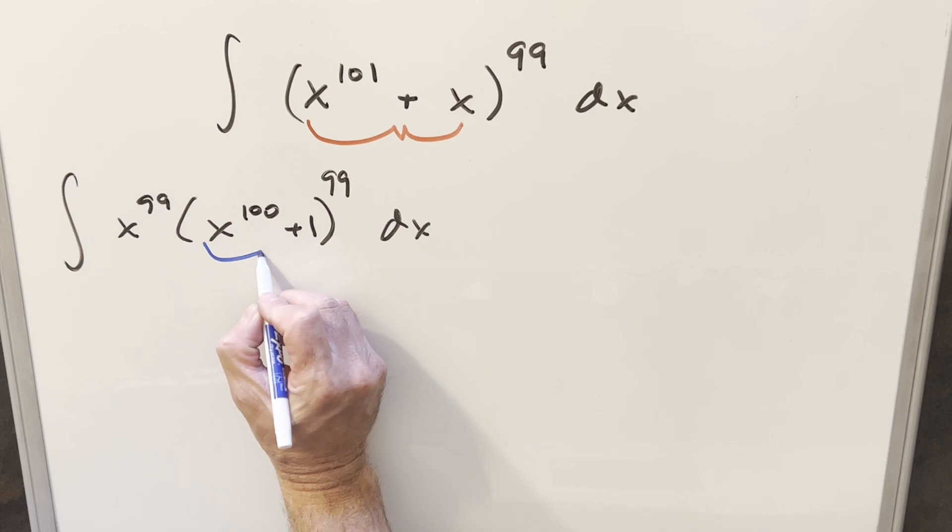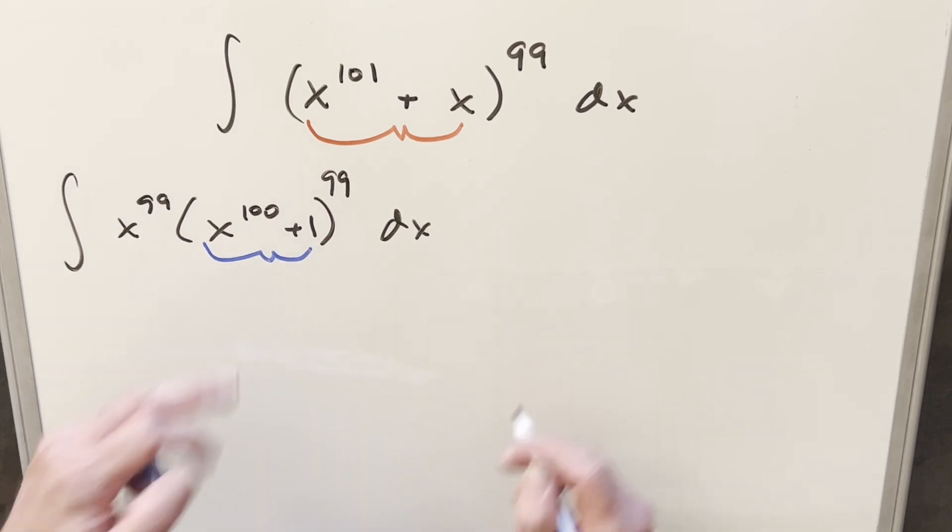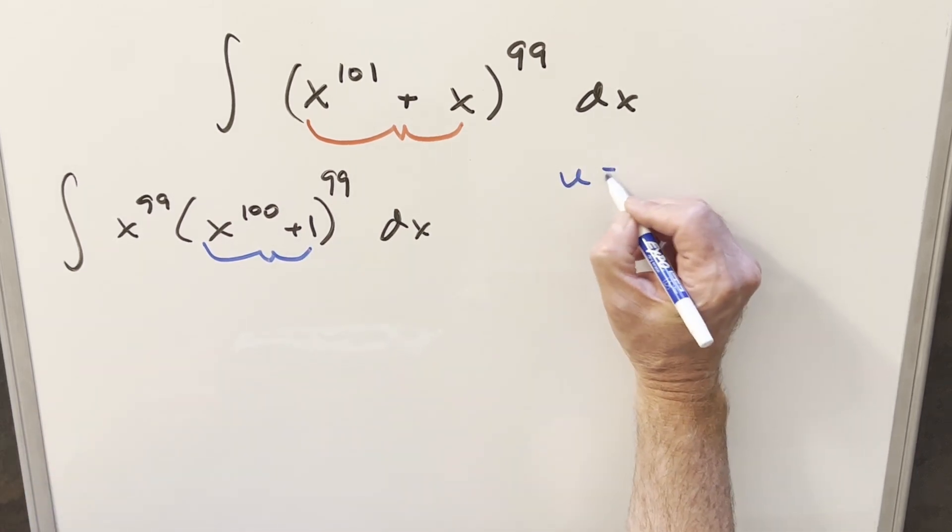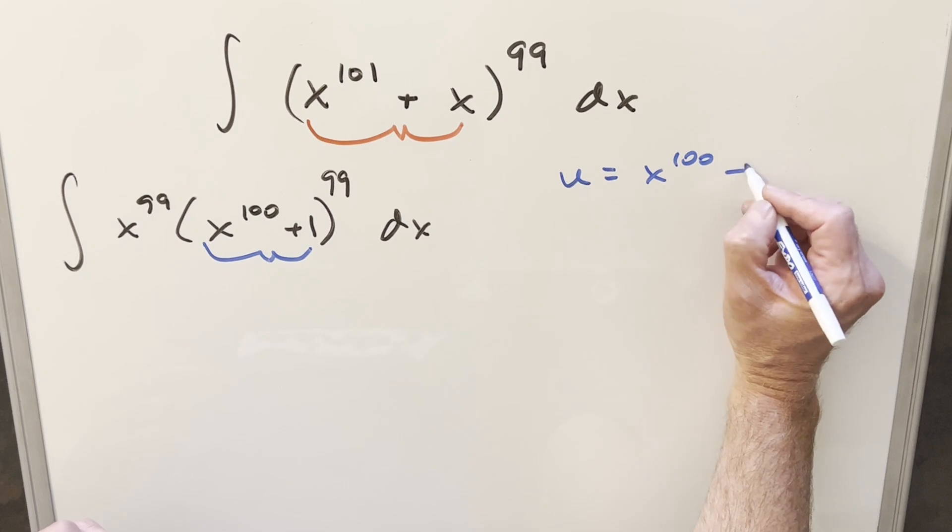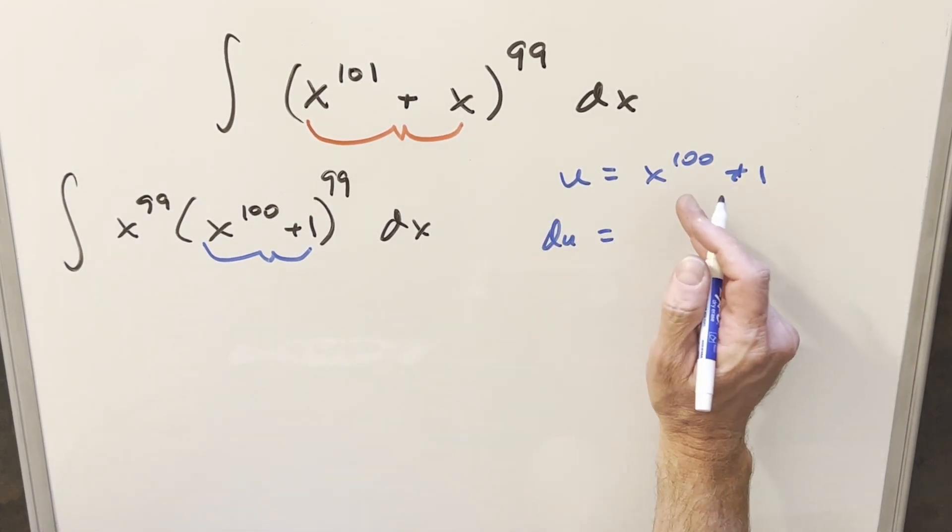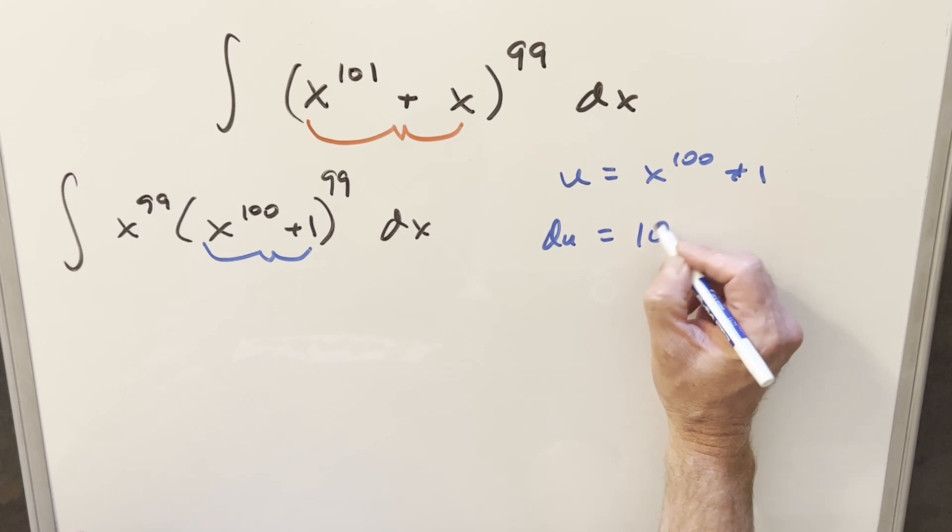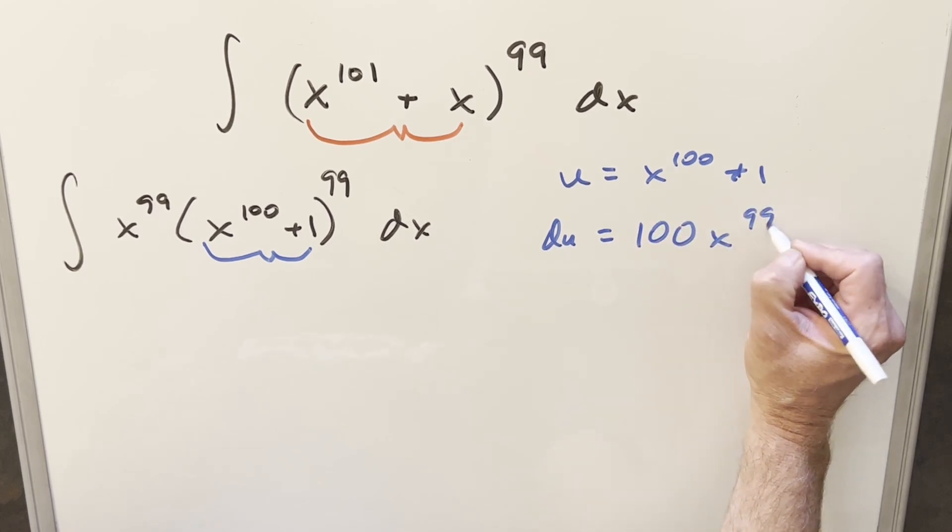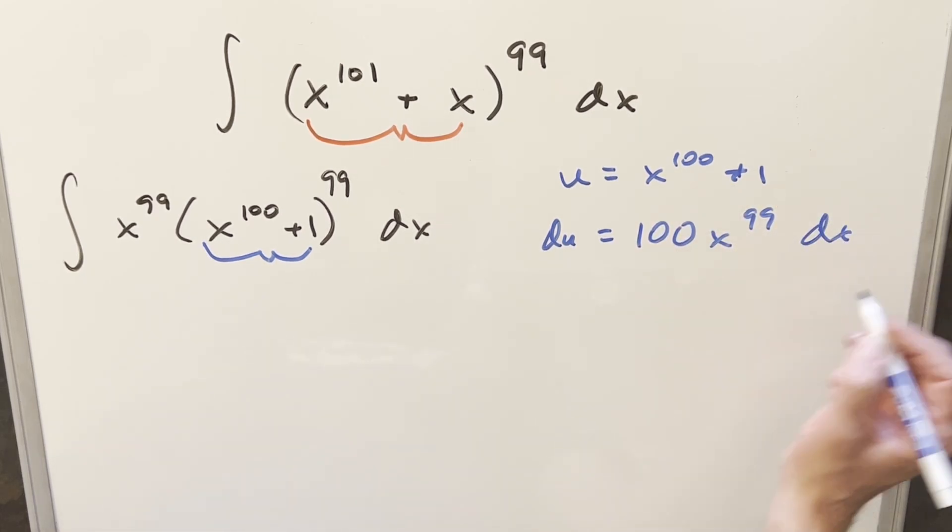Okay, now here with the rewrite let's do this u substitution on what we have right there. I'm going to set my u equal to x to the 100 plus 1. Take a derivative on this. Du is going to be power rule here. 100x to the 99. Derivative of 1 is zero and then we have a dx on the end.